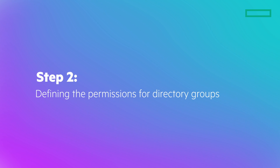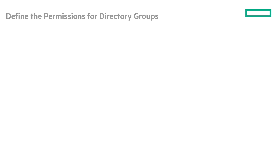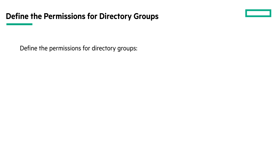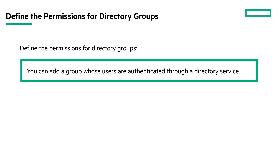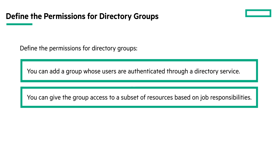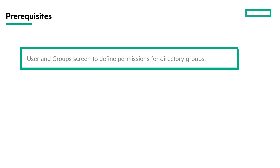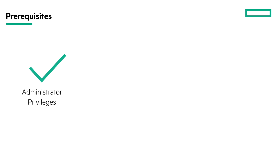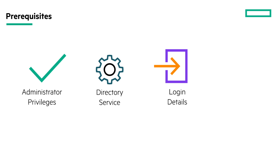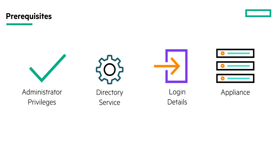Let us start with step two: defining permissions for directory groups. After an Active Directory service is added, you must define permissions for directory groups. You can add a group whose users will be authenticated through a directory service and give the group access to a subset of resources based on job responsibilities. Prerequisites include: infrastructure administrator privileges, the group must exist in the authentication directory service, and credentials of a directory service user must be available. The directory service must also be added to the appliance.